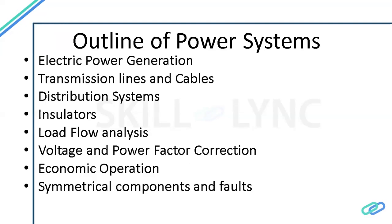Now we are going to see the outline of the power systems course. Previously we covered the basic components — how power systems work, generation, transmission, distribution, the tools we can use, and the hardware components and suppliers. Now the full course outline starts from electric power generation, covering generation methods, then transmission line design and cable design including selection of cables and transmission lines.